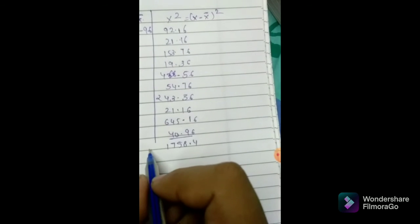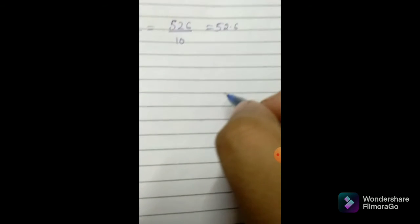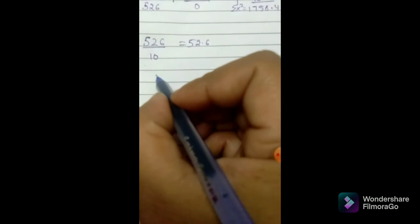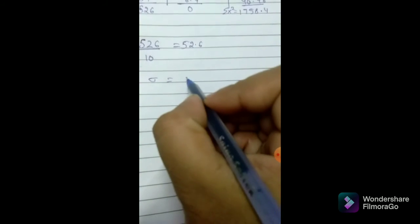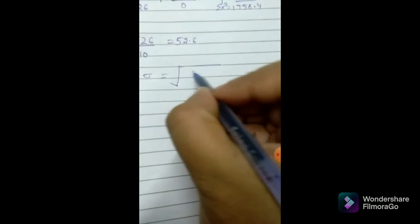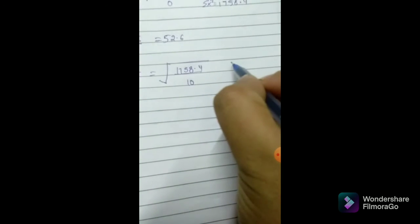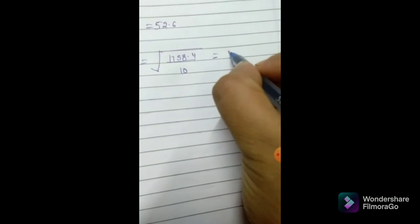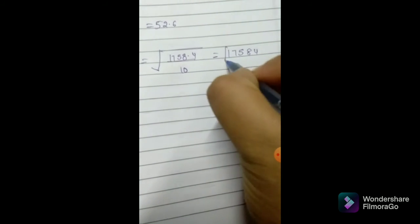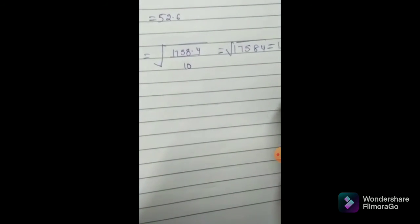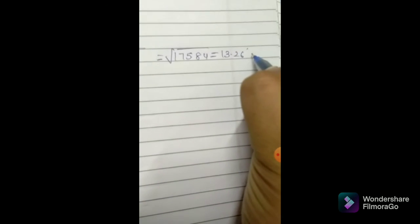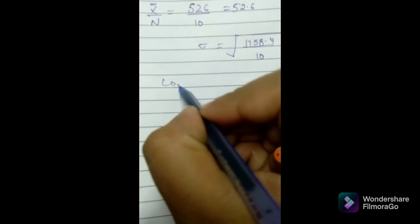The total of these will be 1758.4. Now to calculate standard deviation, we denote it by sigma, and the formula is square root of Σx² by n. So Σx² is 1758.4 divided by 10, which gives 175.84, and the square root of that is 13.26, which will be our answer.